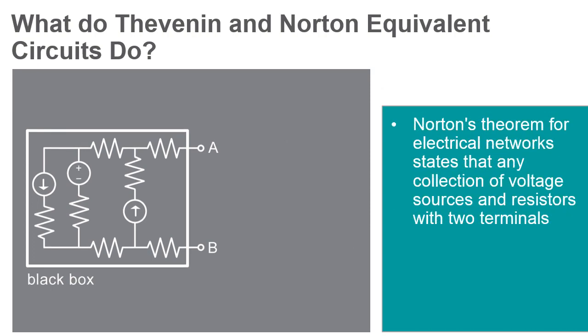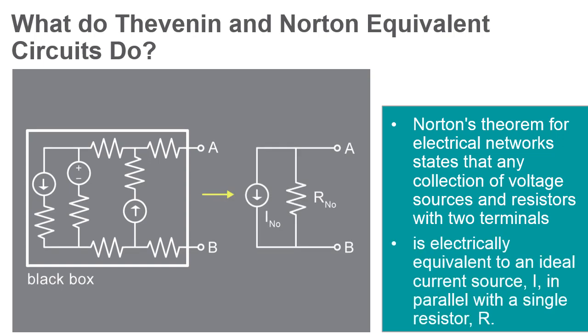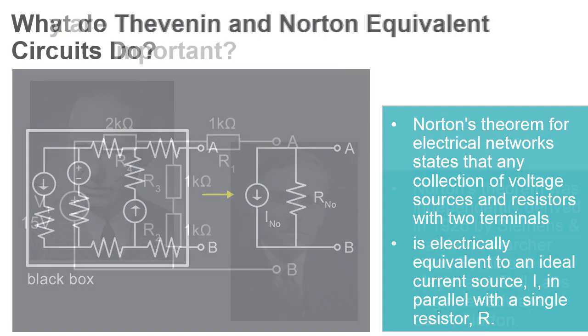Norton's Theorem for Electrical Networks states that any collection of voltage sources and resistors with two terminals is electrically equivalent to an ideal current source I in parallel with a single resistor R.